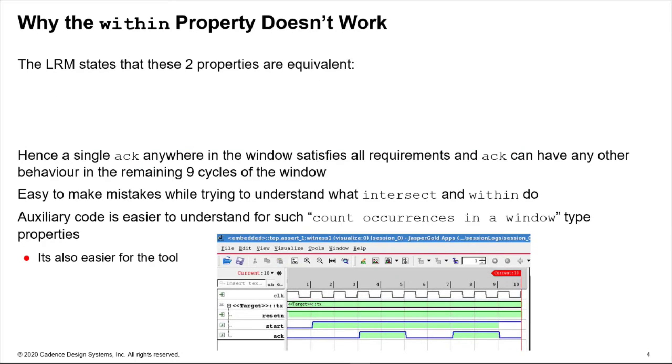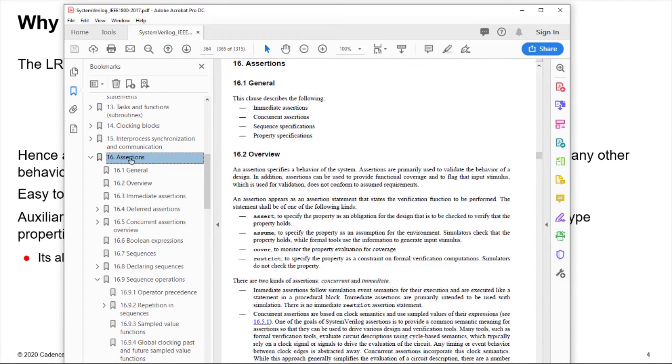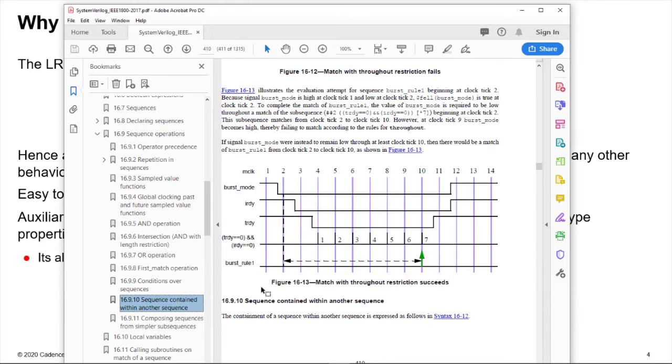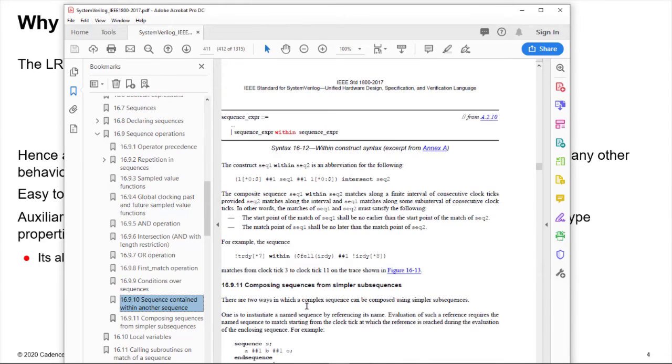Now in the LRM, so let's take a look at the LRM, so the section on assertions, so this is the IEEE standard 1800 which defines the SystemVerilog language. Chapter 16 is assertions, this is the 2017 version.